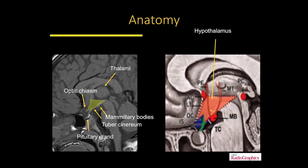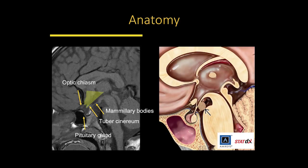Just above the pituitary anteriorly, you have the optic chiasm, which is the junction of the optic nerves that go into the orbits and project back to the thalami for vision. This is a very important structure that is very close to the hypothalamus. This yellow outline shows where the hypothalamus is, presented in a more schematic way.